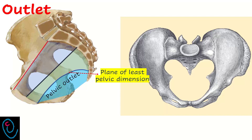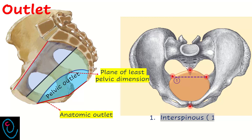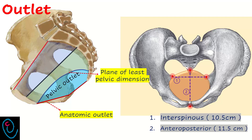The pelvic outlet is a segment bounded by the plane of obstetric outlet above and the plane of anatomic outlet below. The plane of obstetric outlet, called the plane of least pelvic dimension, extends from the lower margin of the symphysis pubis through the level of the ischial spines to end at the tip of the sacrum. The transverse diameter of this plane extends between the two ischial spines and is known as the interspinous diameter — it measures 10.5 cm. The anteroposterior diameter extends from the lower border of the symphysis pubis to the tip of the sacrum and measures 11.5 cm.